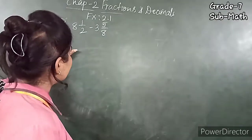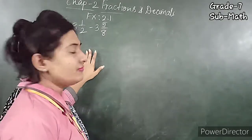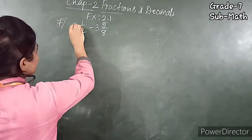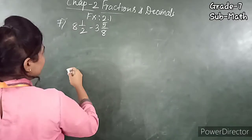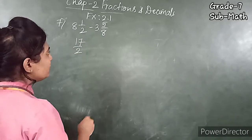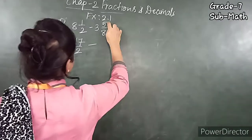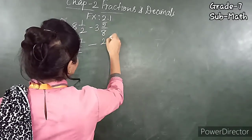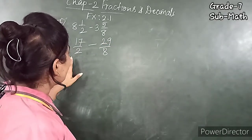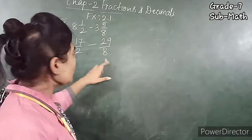Number 7: 8 and 1/2 minus 3 and 5/8, given in mixed fraction form. Convert: 8×2+1 = 17 upon 2, minus 8×3+5 = 29 upon 8. Now take the LCM of 2 and 8. This is your homework.